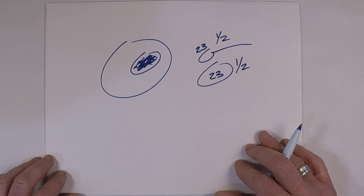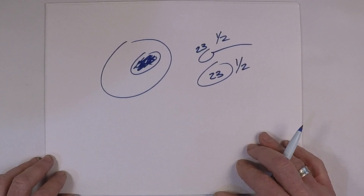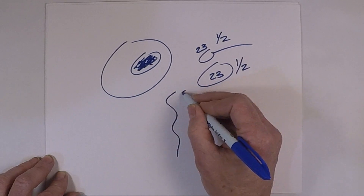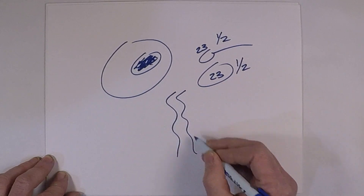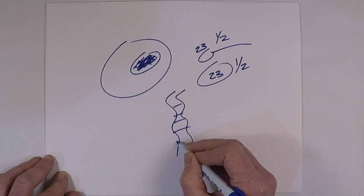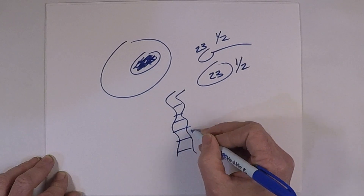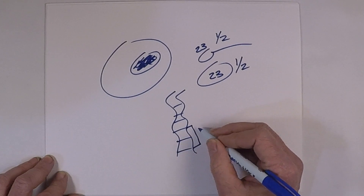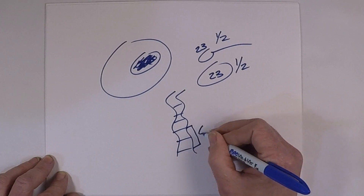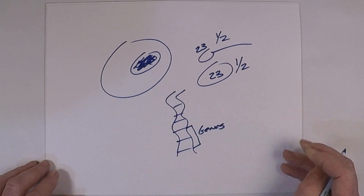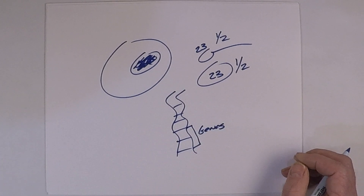When we look at the DNA, if we unravel it, we have these different strands, and we have areas of the DNA called genes. The genes are going to code for the different traits.